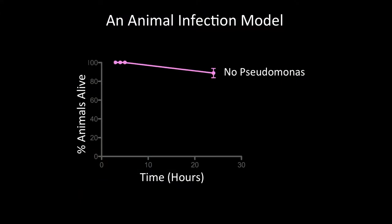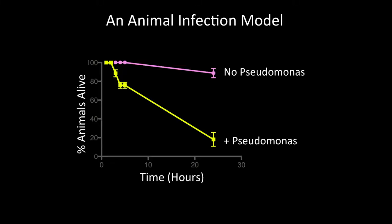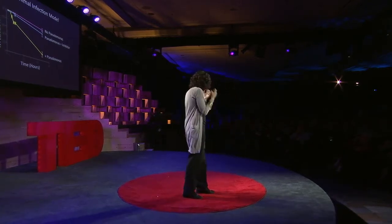It looks like at least in the lab we can shut down biofilms and toxin secretion. What about in an infection? In this animal model system for Pseudomonas infection, we measure whether the animals are alive or dead. Without Pseudomonas, the animals are perfectly fine. With a Pseudomonas infection, all animals die within the first day. But when we give both the Pseudomonas infection and the inhibitor molecule, we can greatly improve the outcome for the animal. We think there must be merit to this idea of interfering with chemical communication as the foundation of a new type of therapeutic.